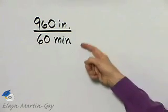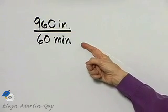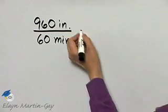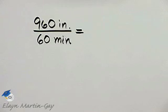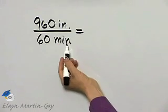So here is my rate written as a fraction. Now we want to write it with a denominator of 1. These units are different. This is a rate so I can't divide out the units.